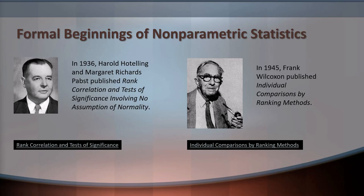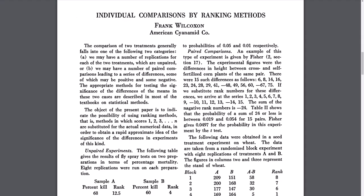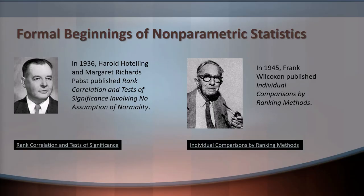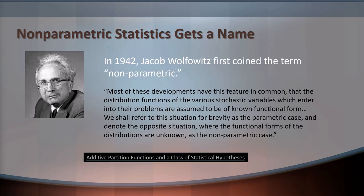In 1945, Frank Wilcoxon published "Individual Comparisons by Ranking Methods." We are actually going to learn about this early method because it is still used as a very common non-parametric statistical method. When you learn about the Wilcoxon test, you can keep in mind that it stems back to this 1945 article. Obviously much has been done since then to study and improve upon the method, but this was the beginning of a method we still use today.